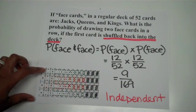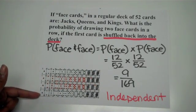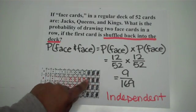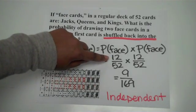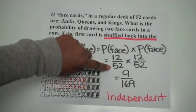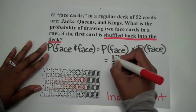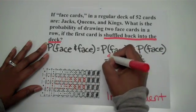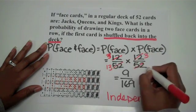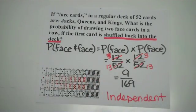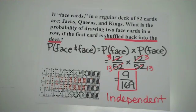For those of you who aren't familiar with a deck of cards, there are four suits: clubs, diamonds, hearts, and spades. Each one has three face cards — Jack, Queen, and King — so there are a total of 12 face cards. The probability of getting a face card is 12 out of 52 possible cards. You can simplify before multiplying: dividing both by 4 gives three-thirteenths times three-thirteenths. So the probability of getting a face card and then another face card, with the card shuffled back in, is nine out of 169.